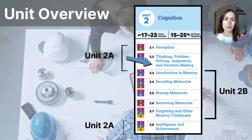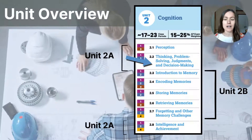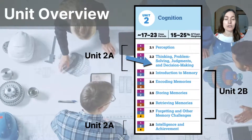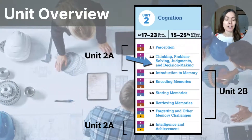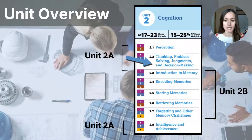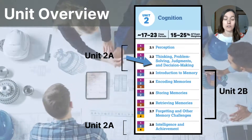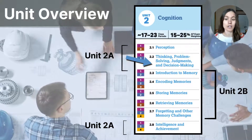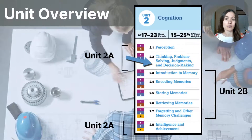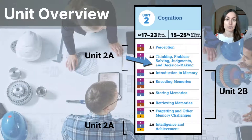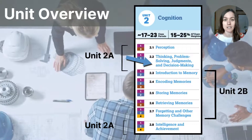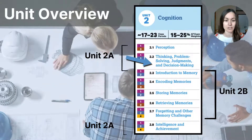Let me start by putting this video into context. Looking at the unit as a whole, I have divided this unit into two parts, part A and part B. This particular video is the third video in the section I'm calling 2A, and it covers the topics listed within Objective 2.2 in the College Board's CED for AP Psychology students.